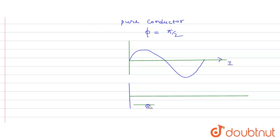The graph will be shifted by π/2, so the voltage graph will start from here.